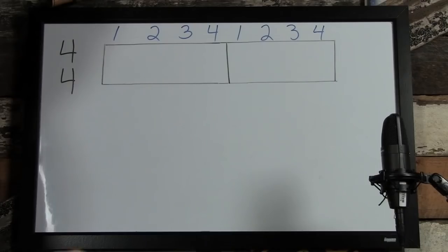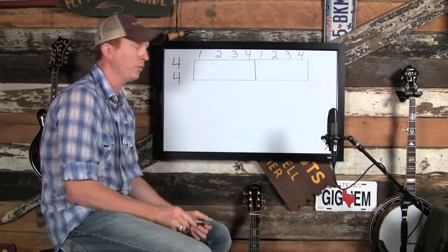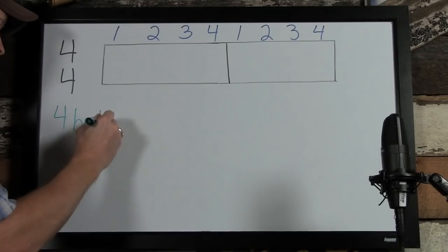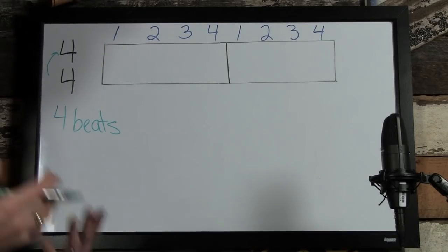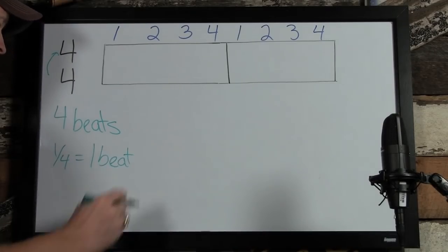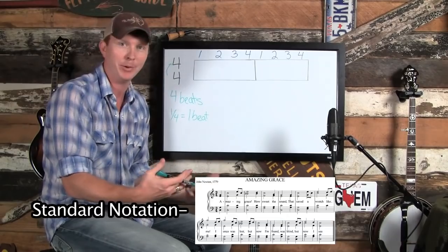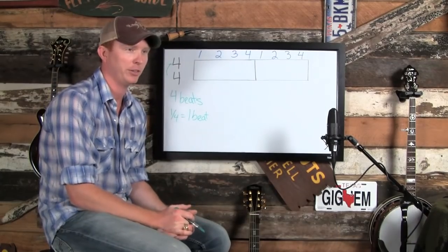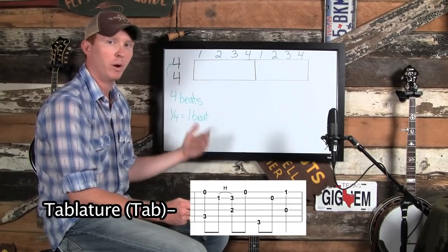Here I have two blocks — essentially two measures — and we're dealing in 4/4 time, which is what most songs and most commercial music use. 4/4 time simply means there are four beats per measure — that's what the top four means. The bottom four means that a quarter note receives one beat, telling us the worth of a quarter note. Now, what does a quarter note look like? Classical and jazz musicians deal in standard notation, the notes you'd see in a hymnal or singing in choir.